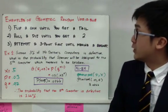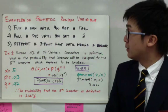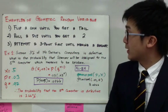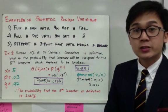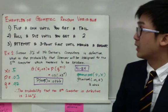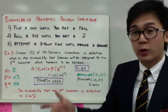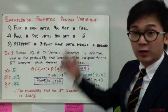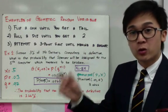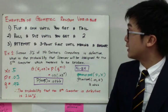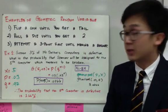Here are some examples of geometric probability experiments: flipping a coin until you get a tail, rolling a die until you get a 2, and attempting a 3-point shot until making a basket. Notice that none of these involve a fixed number of trials. For example, you might flip a coin and get a tail on the first flip, or you could flip it 100 times and still not land a tail — that's what geometric probability describes.